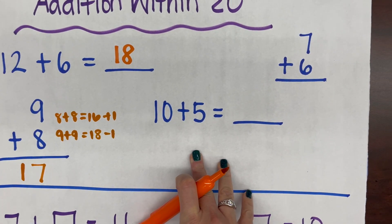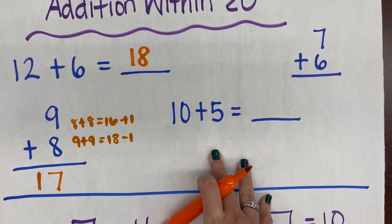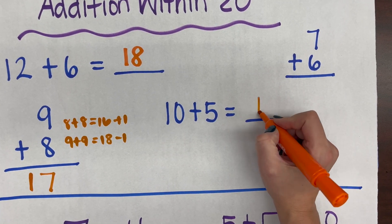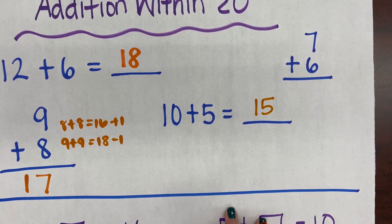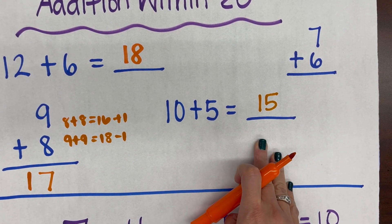Moving on to 10 plus 5, I know that 10 and 5 more gives me a teen number from first grade, so 10 plus 5 more is 15. I could also use a 10 frame to support it, plus 5 more, which would also give me 15.